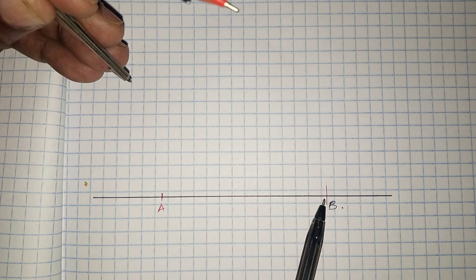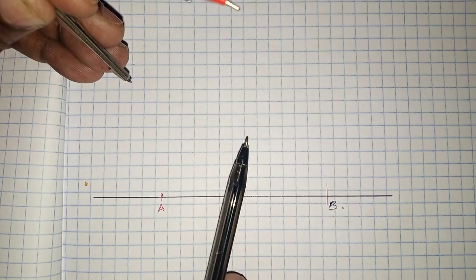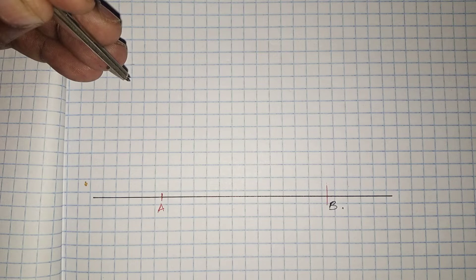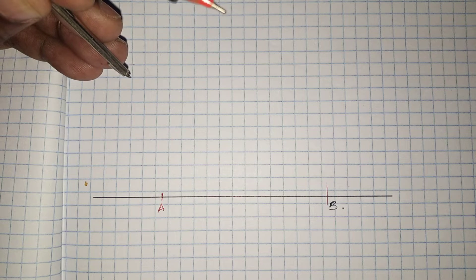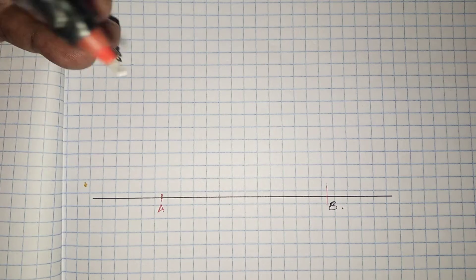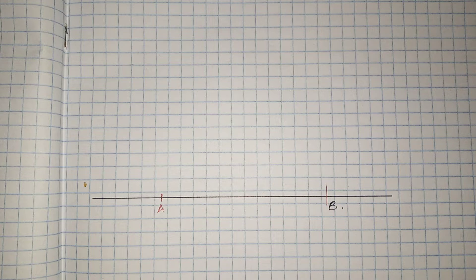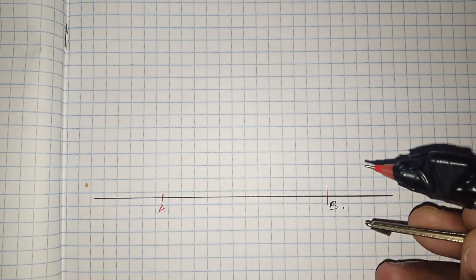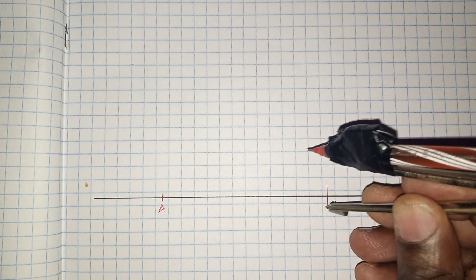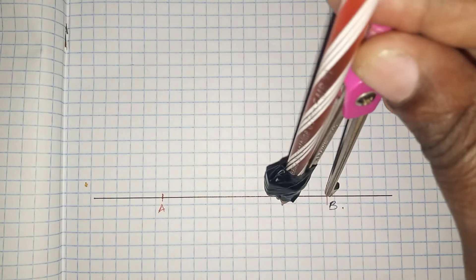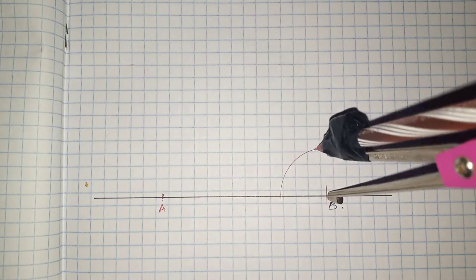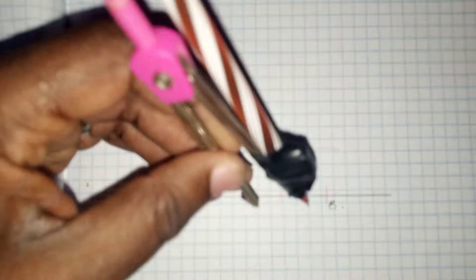We are also told that BC is 6 cm and angle ABC is 30 degrees. We are not supposed to use a protractor, but we are expected to construct an angle of 30 degrees.